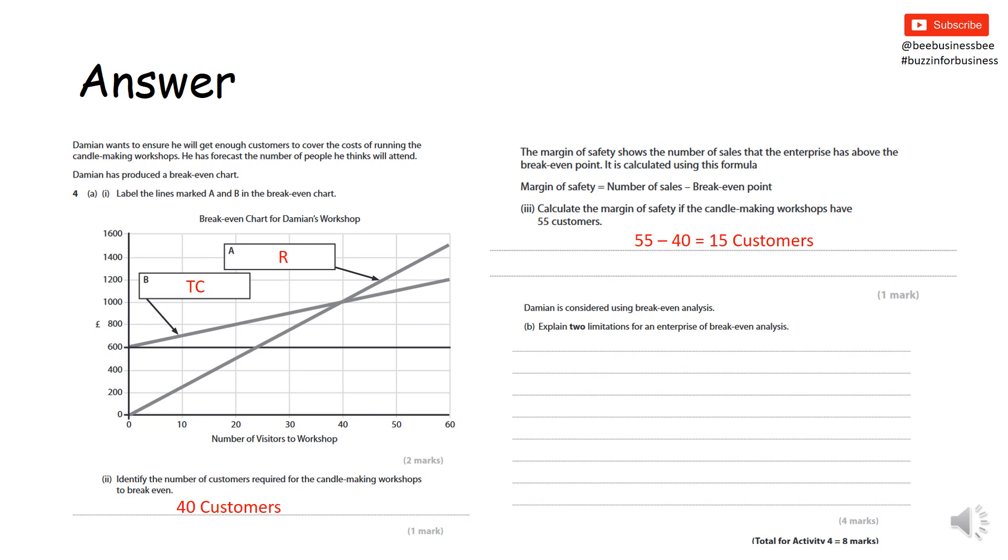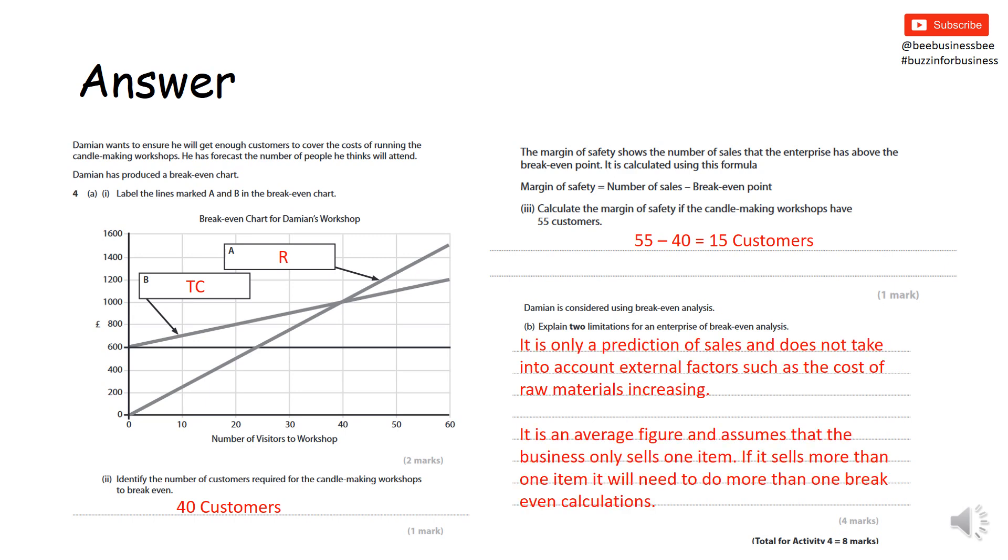The next question says explain two limitations. Explain - so I need a point and I need why, and I need it twice. For example, only a prediction. There's your first point - it's a prediction. Then you explain why. It doesn't take into account external factors such as the cost of raw materials changing, or a competitor opening. These are all answers that are valid or acceptable. Then my second point - an average figure. It assumes a business only sells one product. So actually if it sells more than one product, you'll have to do it more than once. You can have things like it's time consuming, it takes time to plan out. These are all valid answers that you're allowed to use. Remember, there's no set answer at this point because any valid answer is accepted. Hopefully you've done well with that question.